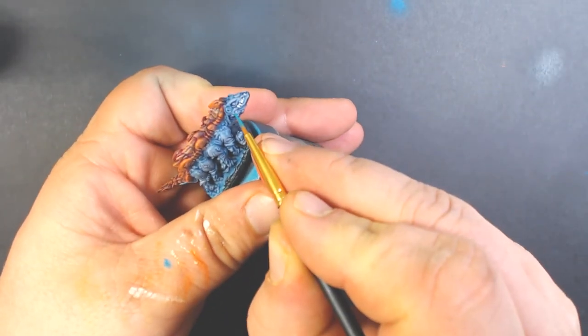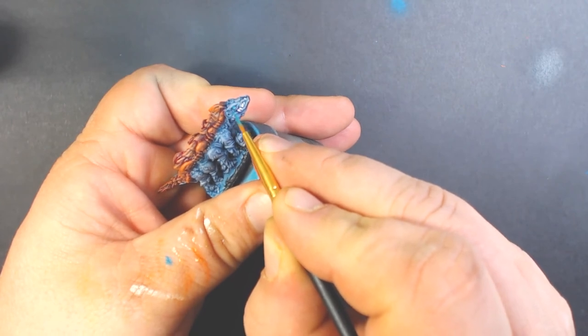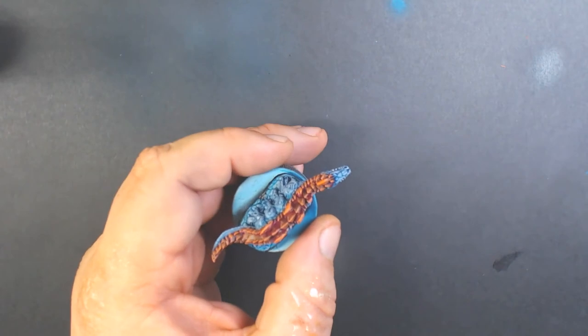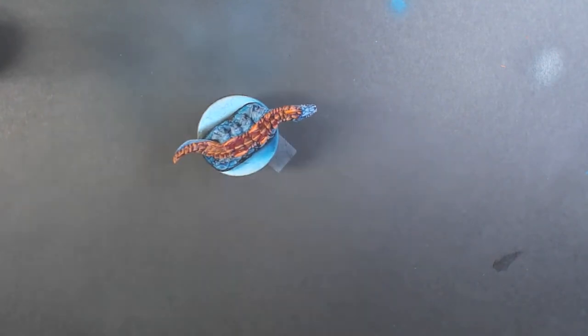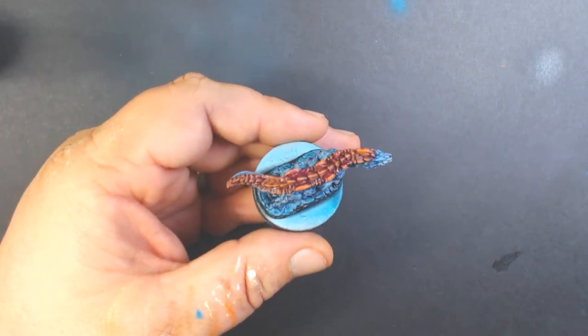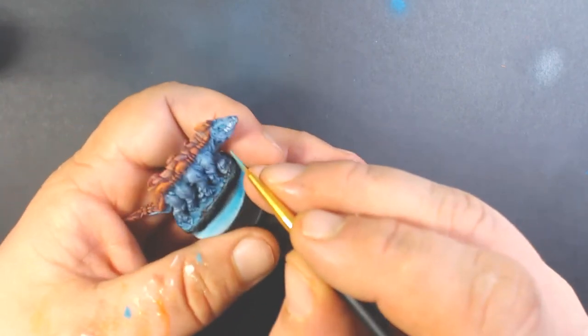Here I've got some P3 Meridius Blue and I'm just coating the eyeball. Then I take some P3 Arcane Blue and paint the inner two-thirds of the eyeball. We don't want to cover up all of the Meridius Blue.